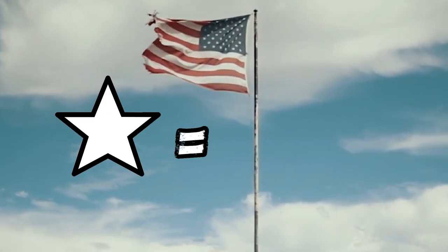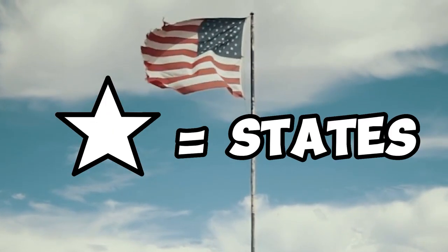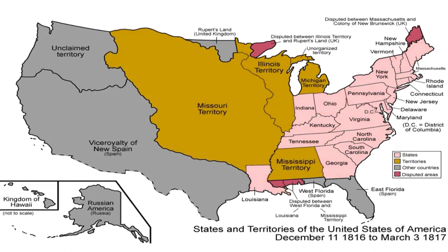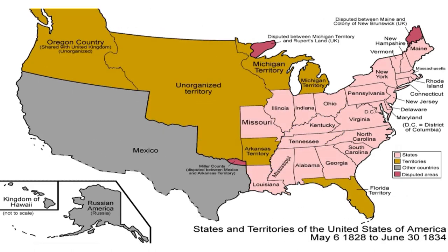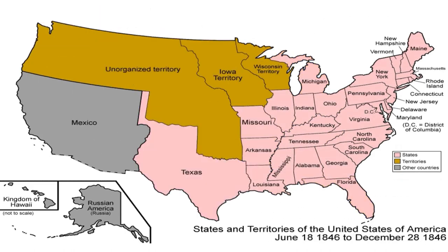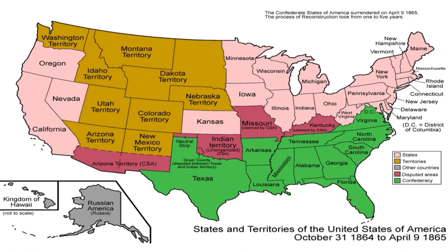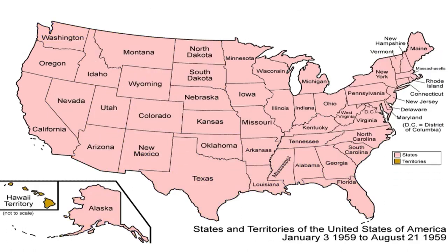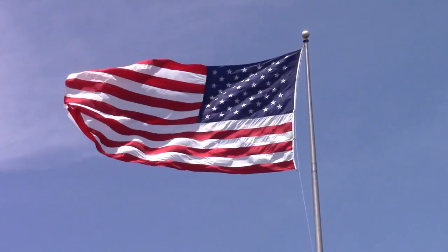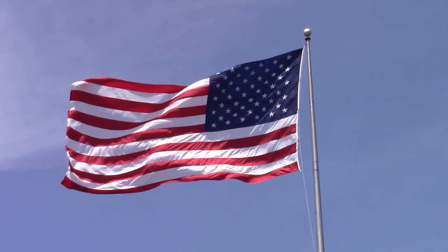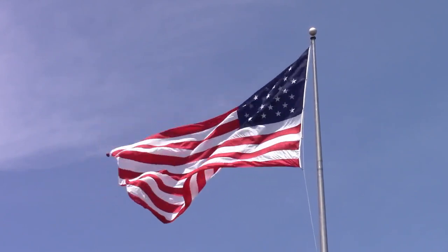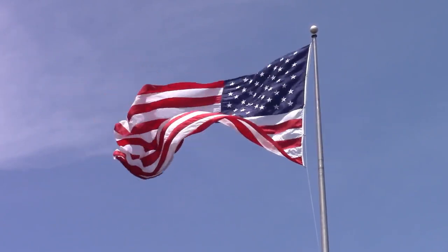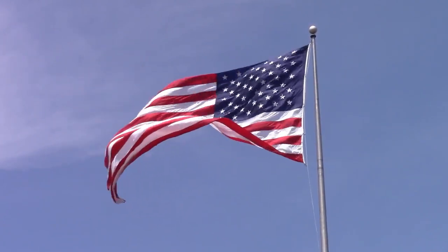The number of stars is equal to the number of states. The stars on the flag are a visual representation of the expansion of the U.S.A., with each star signifying the addition of a new state to the country. Together, the stars and stripes on the American flag symbolize the unity, history, and growth of the United States of America.